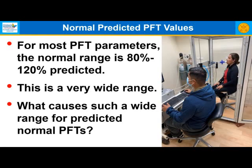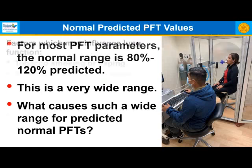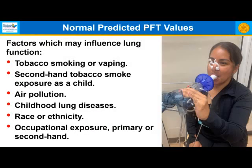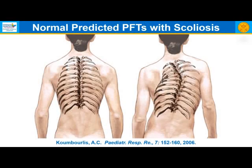For most pulmonary function parameters, the normal range is 80% to 120% predicted — a fairly wide range. Factors that may influence lung function and contribute to this wide range include tobacco smoking or vaping, secondhand tobacco smoke exposure as a child, air pollution, childhood lung diseases, race or ethnicity, and occupational exposure either primary or secondhand.